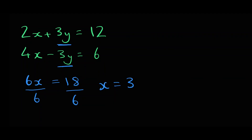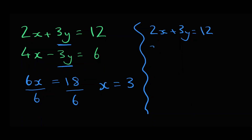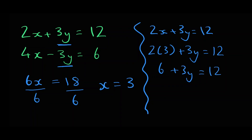Now that we have a value for x we can substitute it into one of the equations to work out what y is. Using 2x plus 3y equals 12, if we substitute x equals 3 we get 2 times 3 plus 3y equals 12, which means 6 plus 3y equals 12. Taking 6 from both sides gives 3y equals 6, and dividing both sides by 3 gives y equals 2. So x equals 3 and y equals 2.